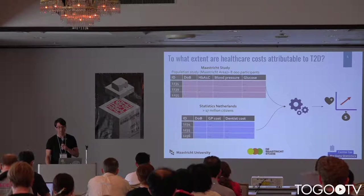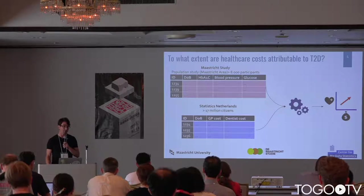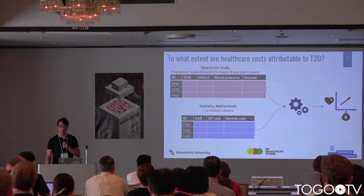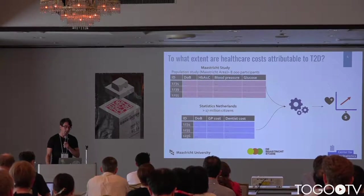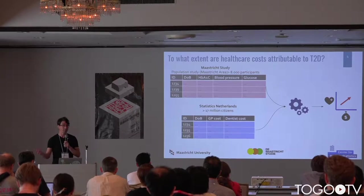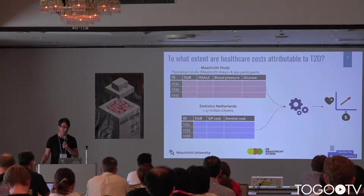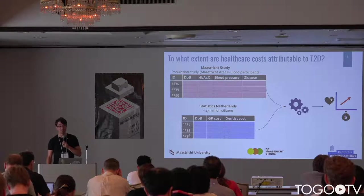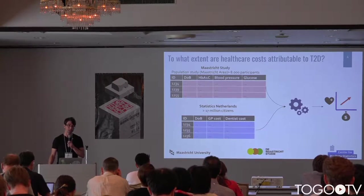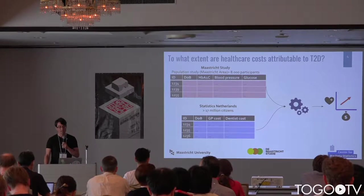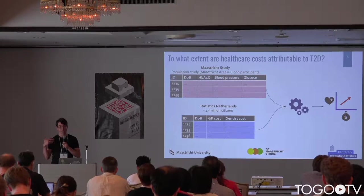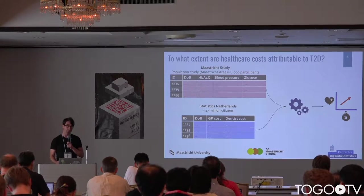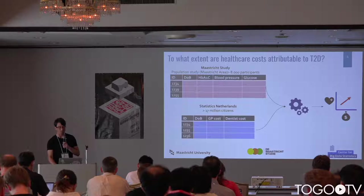In our use case, we're trying to learn the social and economic determinants of type 2 diabetes. We're using data from the Maastricht Study, which is a prospective cohort study in the Netherlands, along with data from Statistics Netherlands, which is the national government office for statistics. What we're trying to do is link these two datasets without being able to use the patient identifier, because it's illegal for us to do so as a researcher. So we want to leave the data where they are and bring the analysis to the data, to learn the association between health status and health care costs.